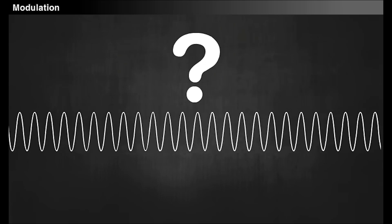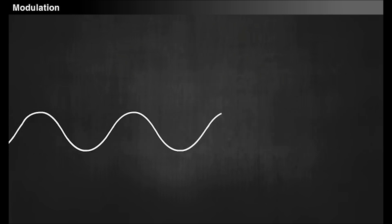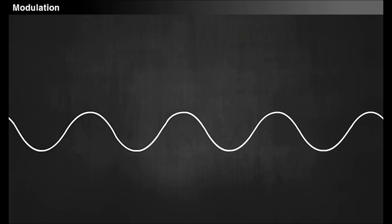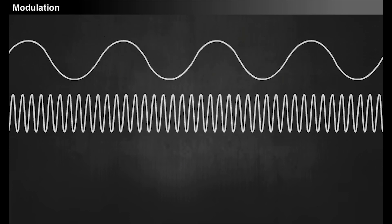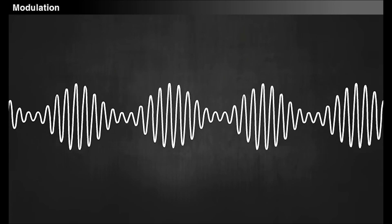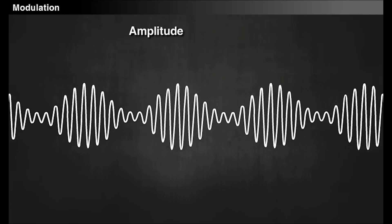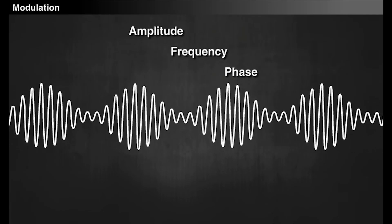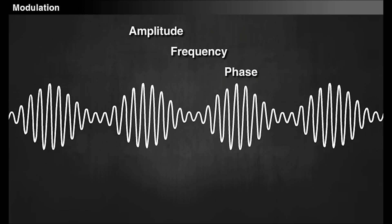But how will we increase the frequency of the message signal? Actually, we will not increase the frequency of the message signal. But we will superimpose the low frequency message signal with the high frequency carrier signal. Hence, the characteristics, that is, amplitude, frequency, and phase of the carrier signal will be changed in accordance with the message signal. This process is called modulation.